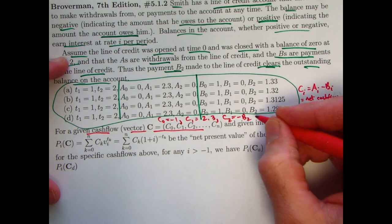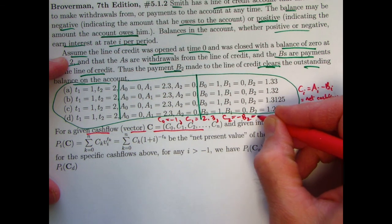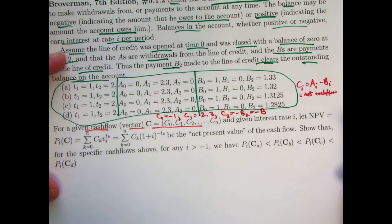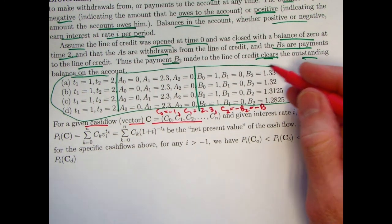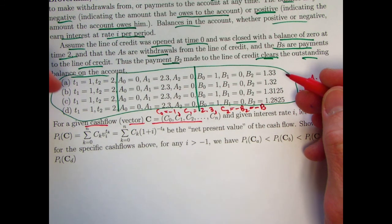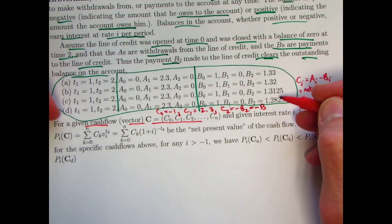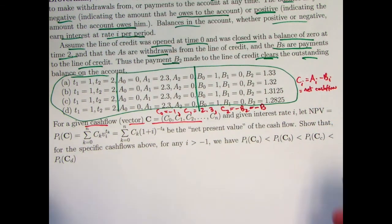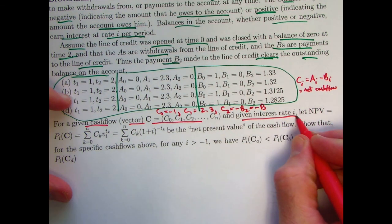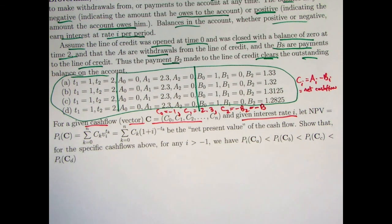And C two is going to be zero minus whatever B two is. For simplicity, I'm going to let B two be represented by just the letter B. So B is going to be this amount that can change as we go from scenario A through scenario D as B decreases. We've got a given interest rate I. I could call this an interest preference rate.